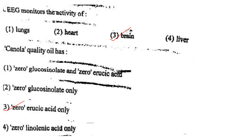Next one: EEG monitors the activity of option 1, lungs; option 2, heart; option 3, brain; option 4, liver. Answer is option 3: brain.